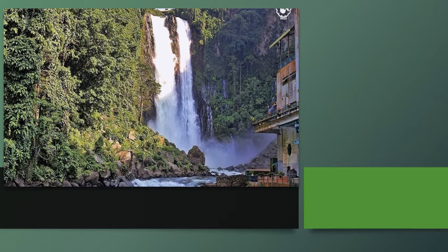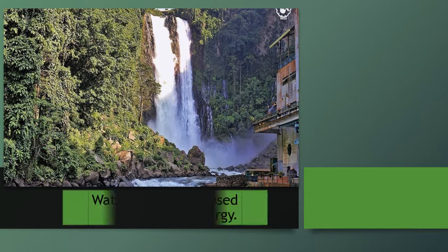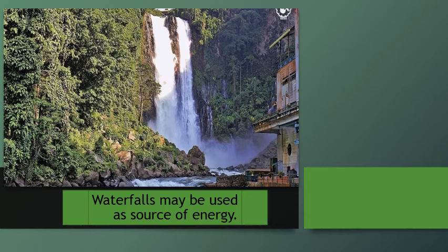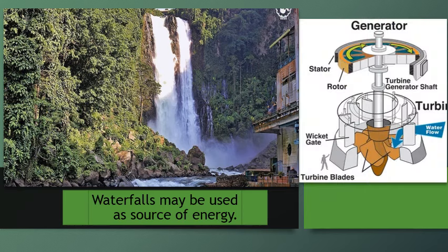I'm sure you are all familiar with this water form — very good, this is a waterfall. Waterfalls may be used as a source of energy. The creation of hydroelectric power begins with a water turbine. This device consists of angled blades wrapped around a wheel. Its operation is analogous to that of a pinwheel, with the turbine spinning as it comes into contact with moving water. When the turbine is placed in the path of falling water, it moves a shaft which in turn powers an electrical generator.